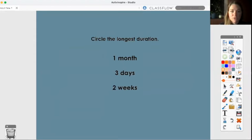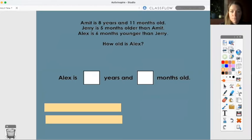Let's have a look at our next question. So circle the longest duration. Have a go at this. One month, three days, two weeks. Well, two weeks is 14 days. So that's definitely longer than three days. And one month is generally 28, 30 or 31 days. Apart from a leap year, in February is 29 days. So that's the longest duration.